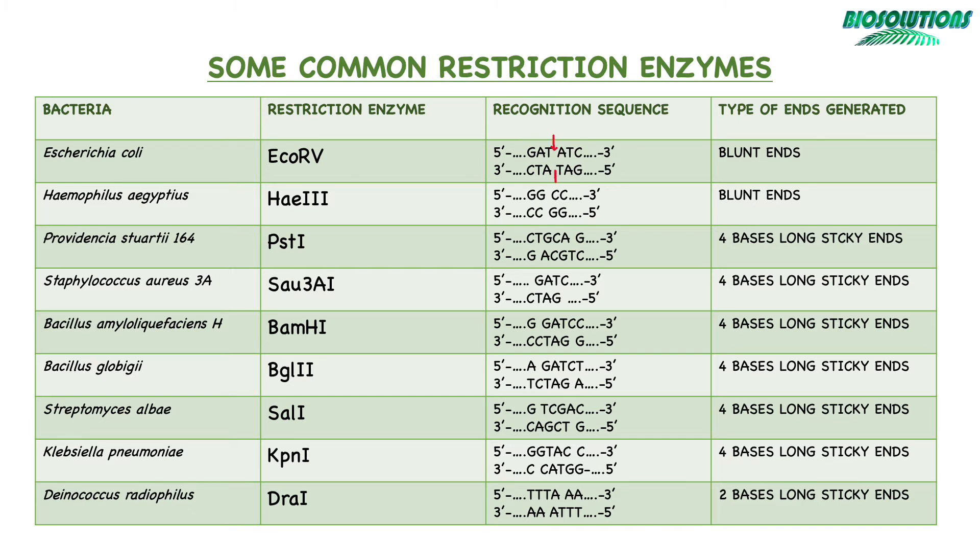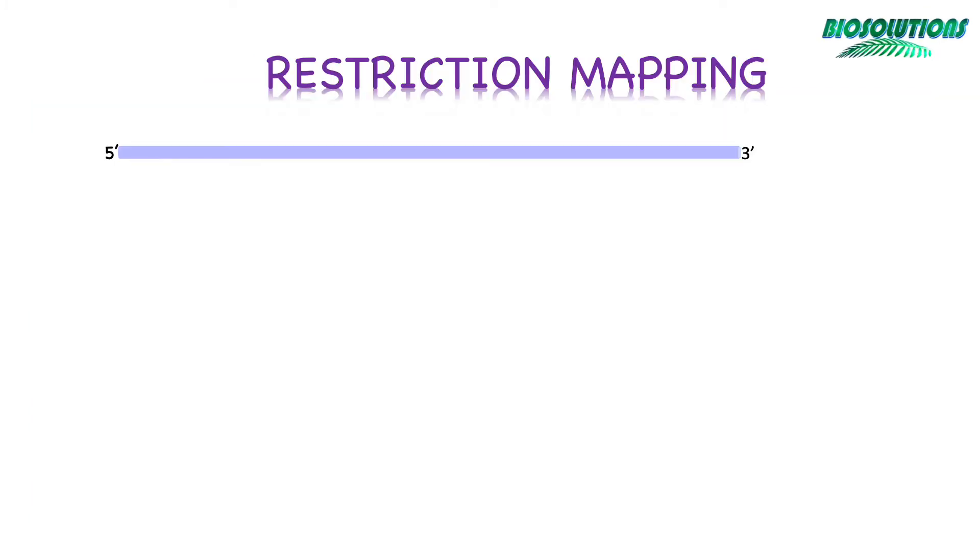Since type 2 restriction enzymes cut within the recognition sequence, we can calculate the sizes of the fragments produced. Therefore, they can be used to create a physical map of a genome or a plasmid or a DNA fragment. They can also be used for cutting DNA at specific locations and then recombining them with another DNA from a different source, thus creating a recombinant DNA molecule. We will learn about this technique, as I said, in an upcoming tutorial.